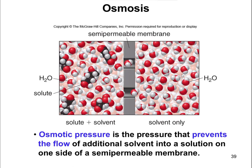But that can't happen because this sugar molecule cannot go over to the right because it can't fit through the pore. But water is still going to do its best to try to dilute that sugar molecule more. So water is going to go from right to left to try to dilute the sugar that's in that left chamber as much as possible.